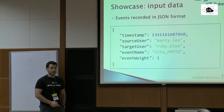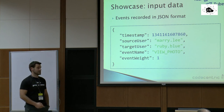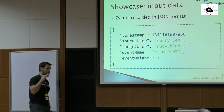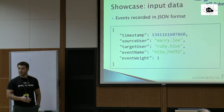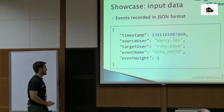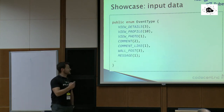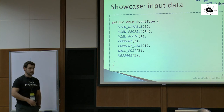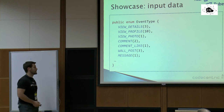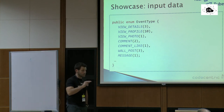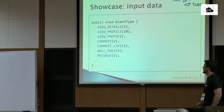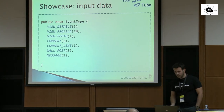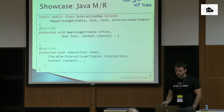The input data is a JSON record with: a timestamp when the event happened, a source user who triggered the event, a target user who was the target, an event name for description, and the value of the event. Example trackable events include: viewing someone's profile details, clicking their name, looking at their photos, liking a photo, and so on.